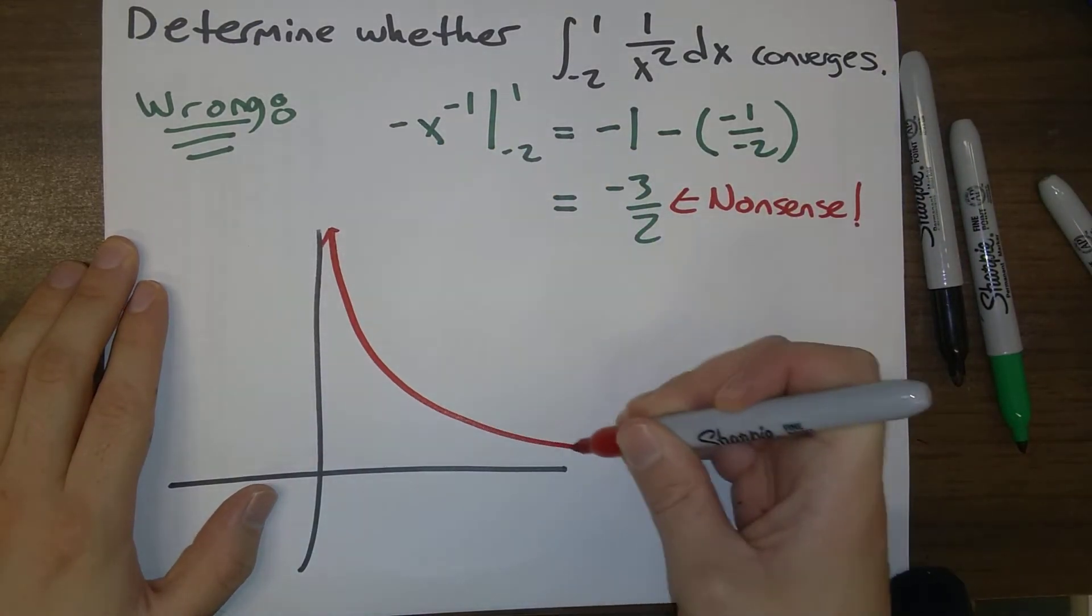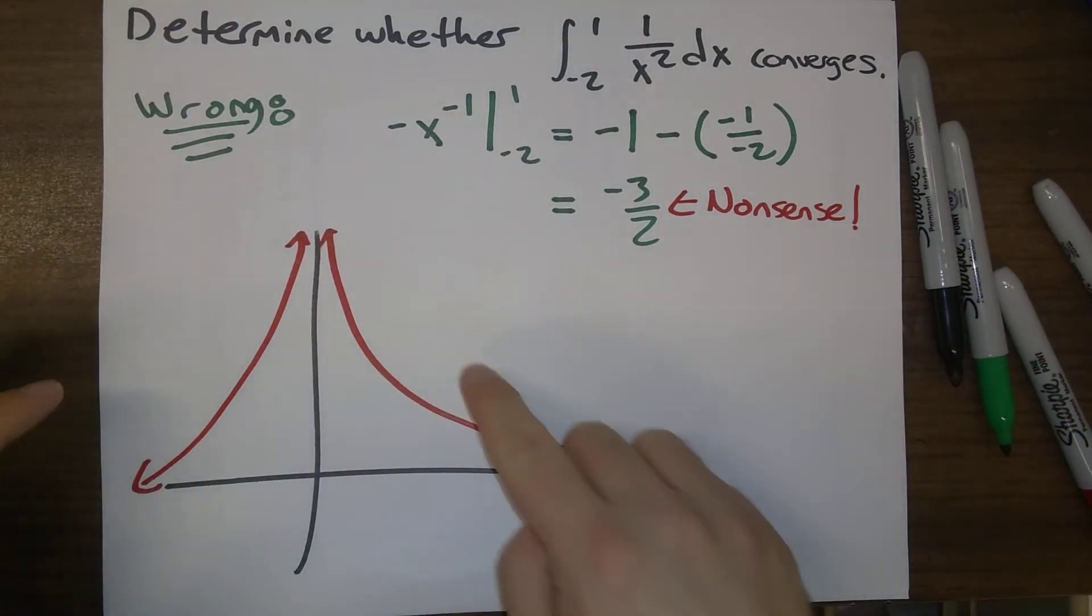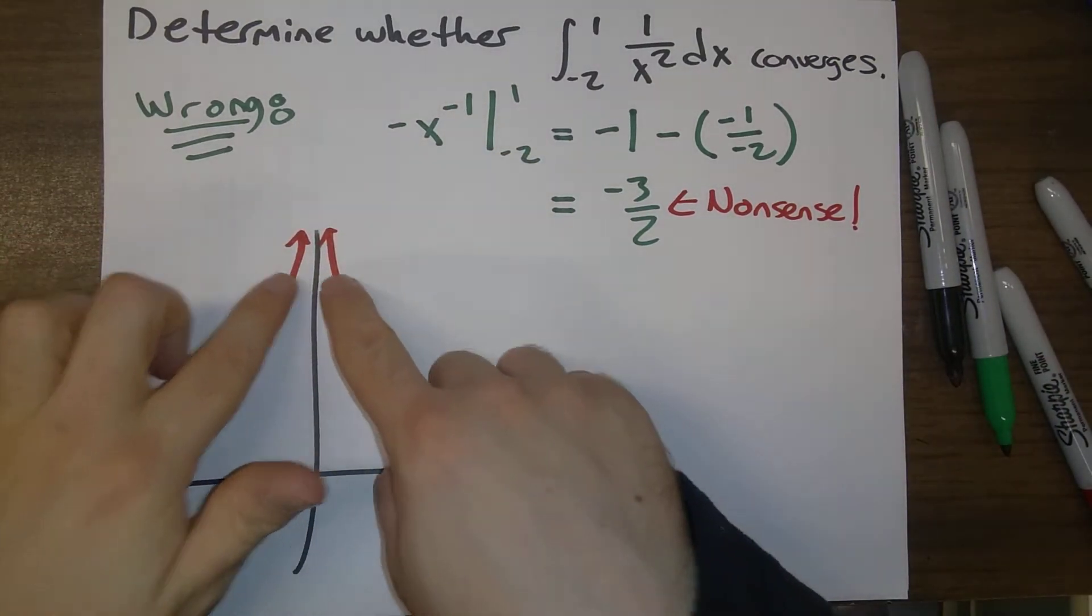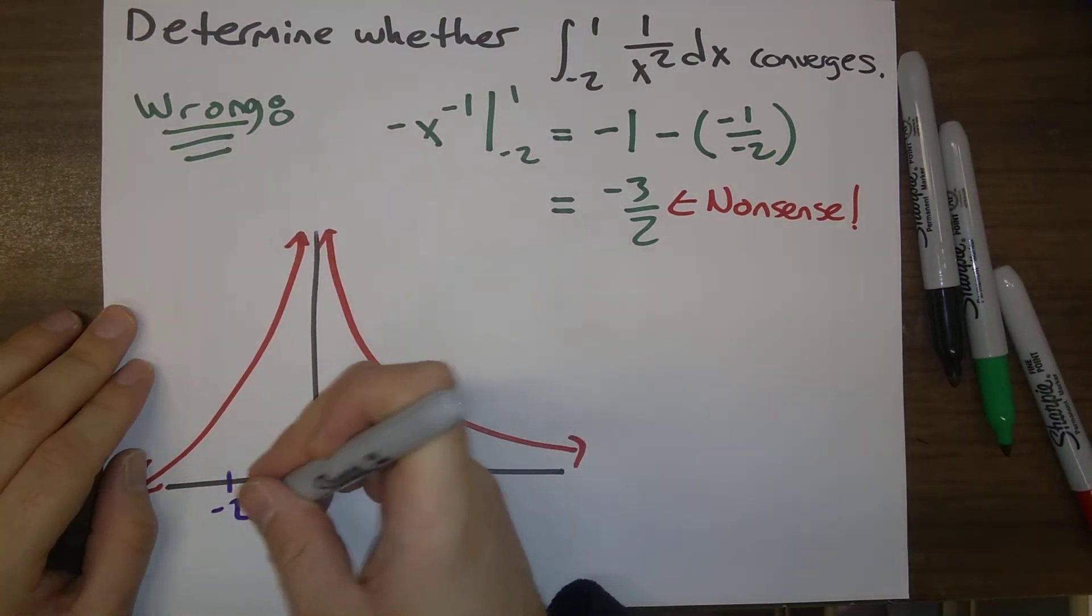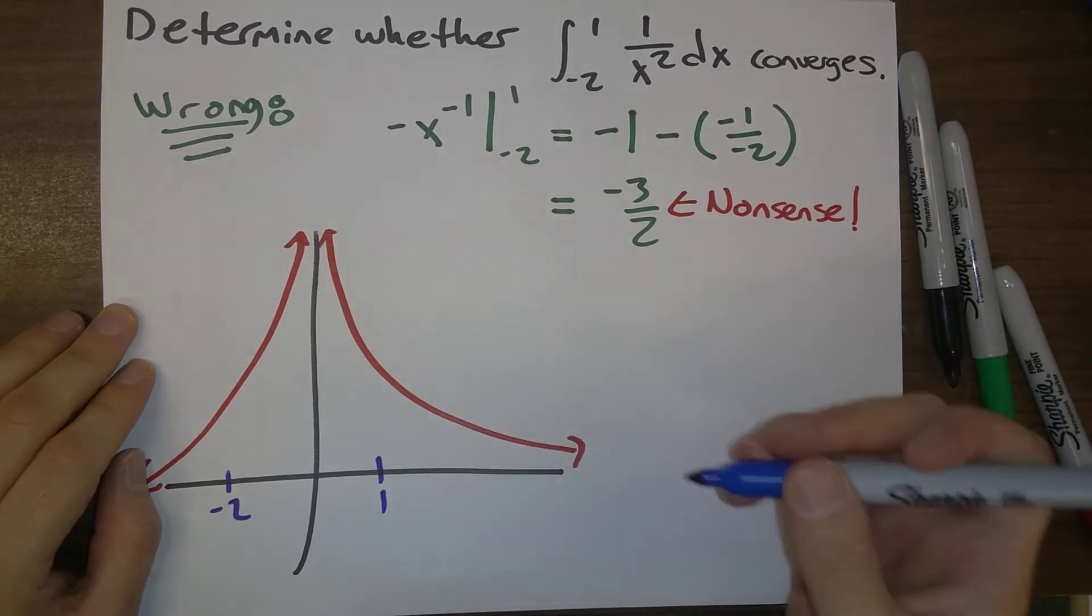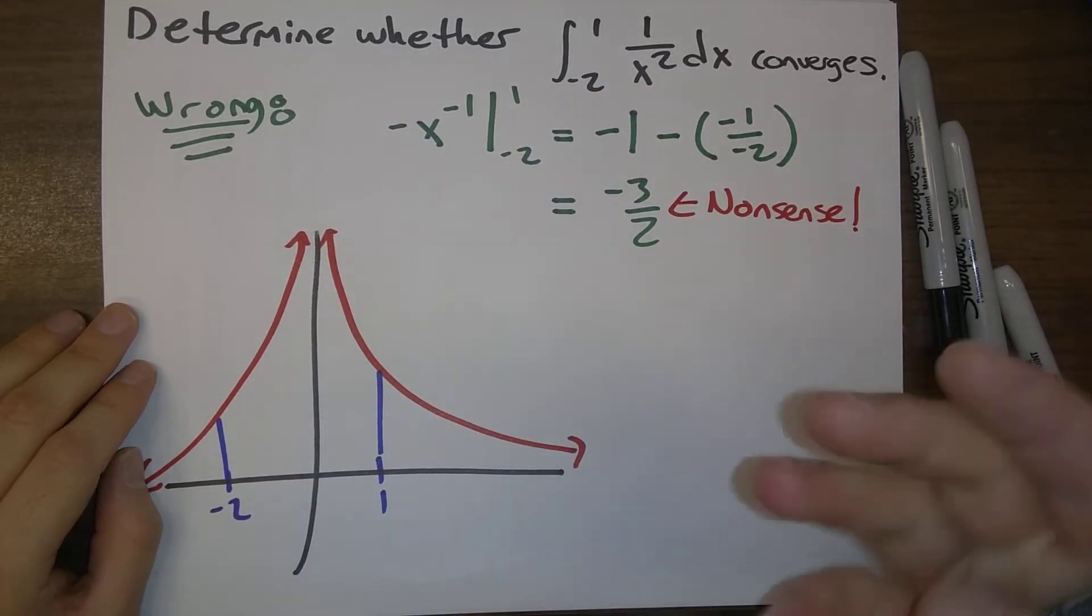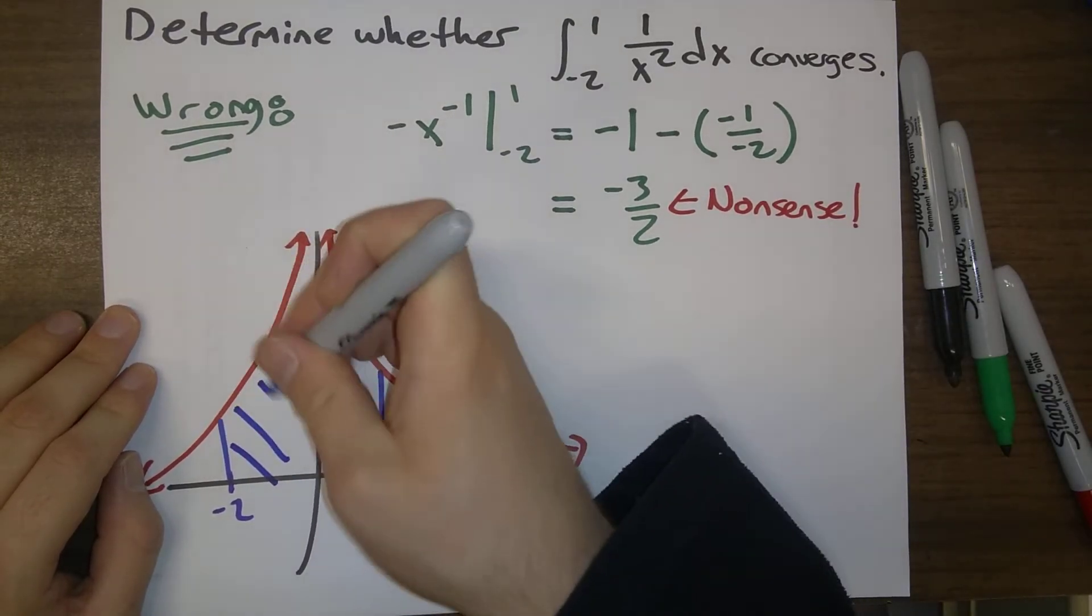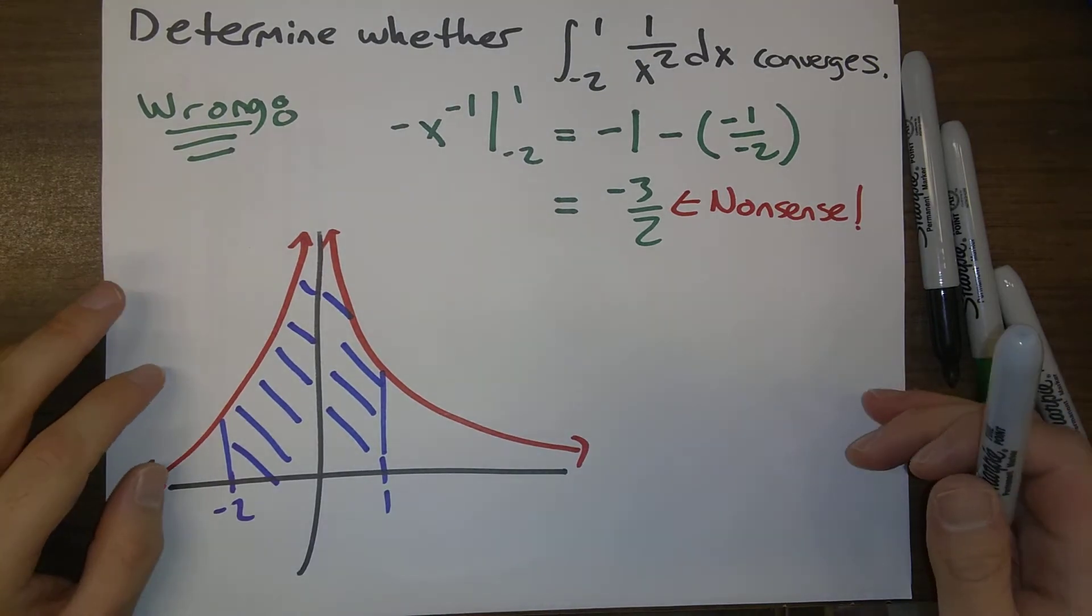So our function is 1 over x squared. So this is what our function 1 over x squared looks like. It has vertical asymptotes as we approach x is equal to 0. And so we're looking for the antiderivative from minus 2 to 1. That's the area under the curve between minus 2 and 1. So we're looking for this area here.